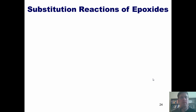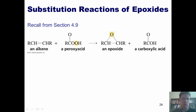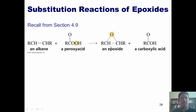We're going to start this lecture by teaching you about substitution reactions of epoxides. As you might remember from chapter 4, if I take an alkene and treat it with a peroxyacid, what it does is convert the alkene into a three-membered ring that contains an oxygen, which is called an epoxide.